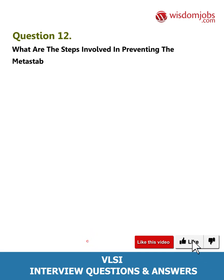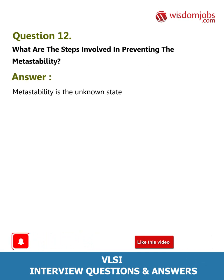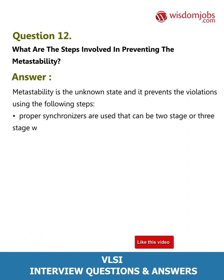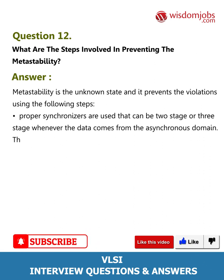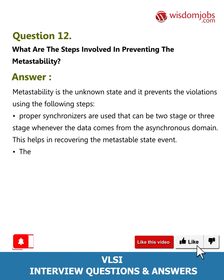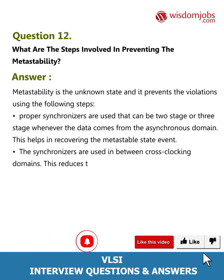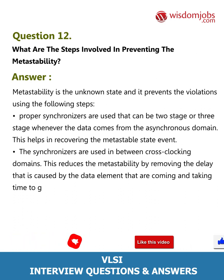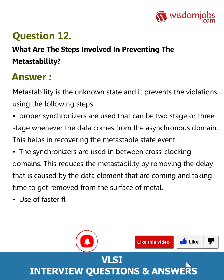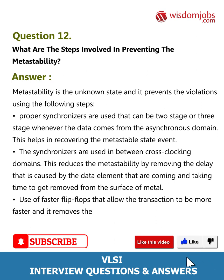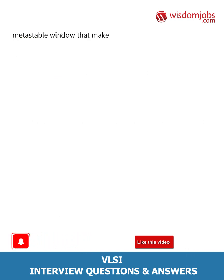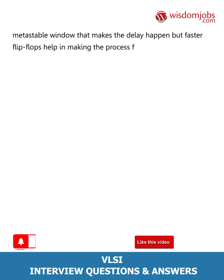Question 12: What are the steps involved in preventing metastability? Answer: Metastability can be prevented by: using proper synchronizers — two-stage or three-stage — whenever data comes from the asynchronous domain, to help recover from the metastable state; using synchronizers between cross-clocking domains to reduce metastability by removing delays caused by data elements; and using faster flip-flops that allow transactions to be faster, reduce delay time between components, and use a narrower metastable window.